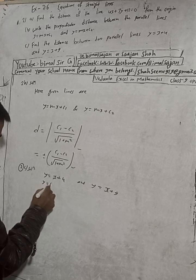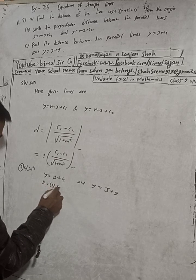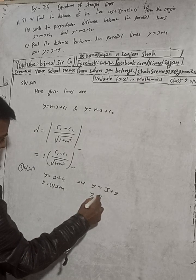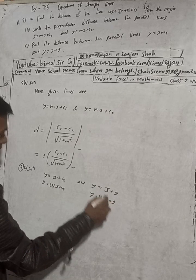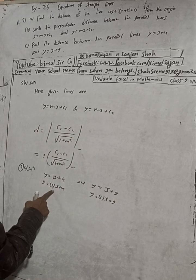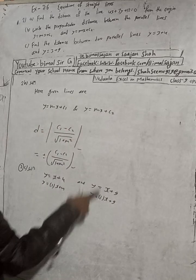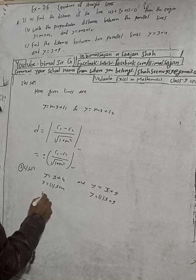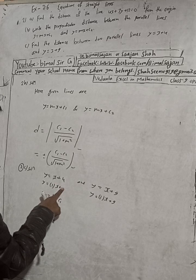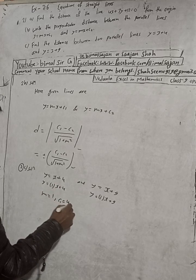Comparing with y equals mx plus c, in both equations m equals 1. This confirms they're parallel. For the first line, c1 equals 4, and for the second line, c2 equals 9.